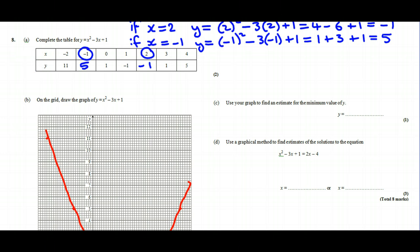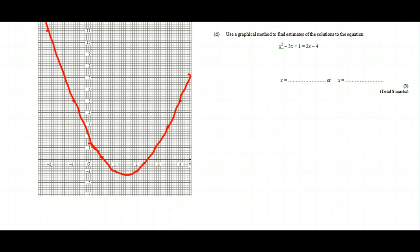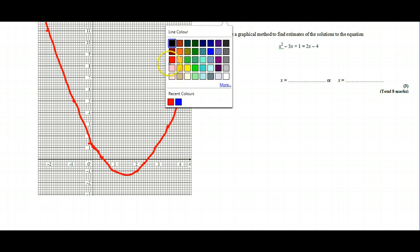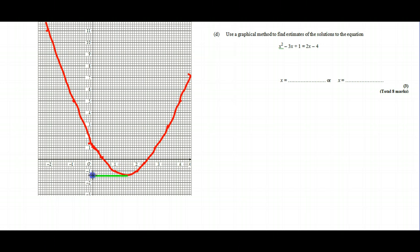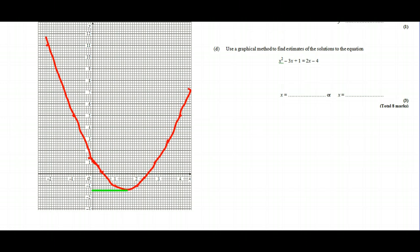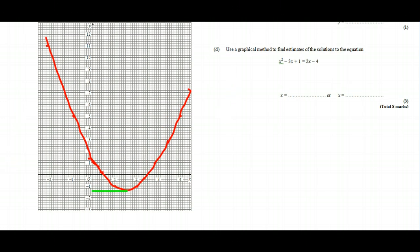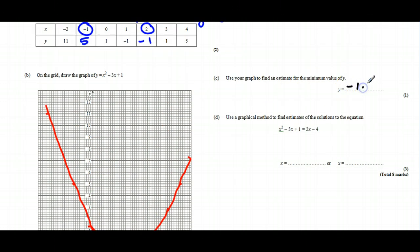It then says use your graph to estimate the minimum value for y. So that means we're going to have to look at this bit over here. There's the minimum value there, and if we draw across, then you can read from the graph and make a judgment about where you think that value of y is. Now according to mine, that looks to be -1.4 according to my particular graph. When you're given the exam, it's obviously larger and allows you to be more accurate.